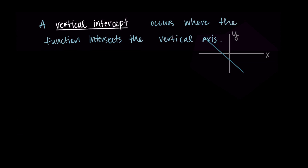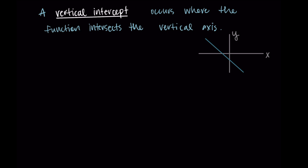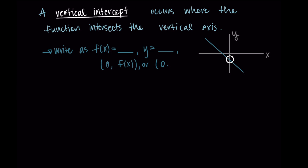Now let's repeat this for vertical intercepts. Here on our graph, this is the point that intersects the vertical or y-axis. If we were going to write what this point was, we could say f(x) equals some value — the output value where it intersects that vertical axis. If y is our output, we could say y equals. Or we could write each of these as a point: zero as the input and f(x) as the output, so (0, f(x)), or (0, y) where y is the output.